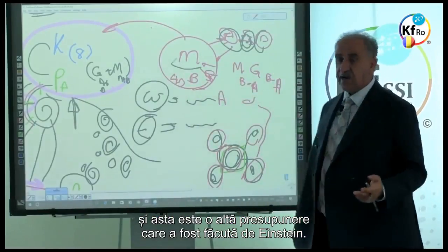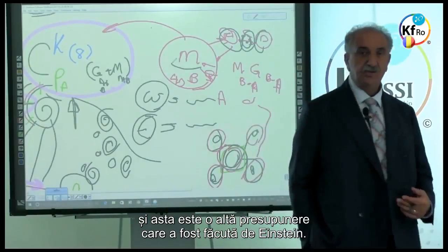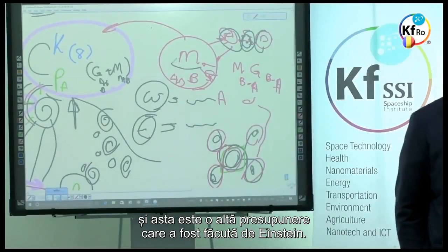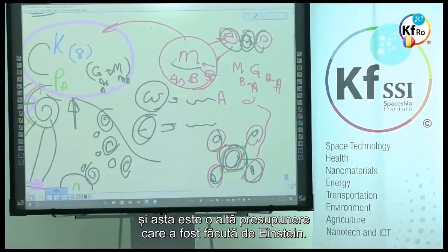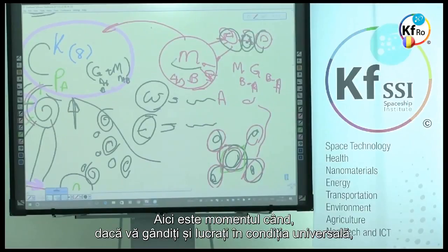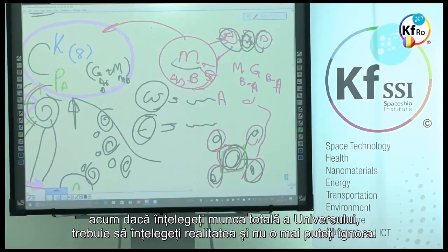So the mass in the universal plasma constant does not exist. And this is another assumption which is made by Einstein. This is where, when you think and work in universal condition, now that you understand the totality work of the universe, you have to understand the reality and cannot ignore.